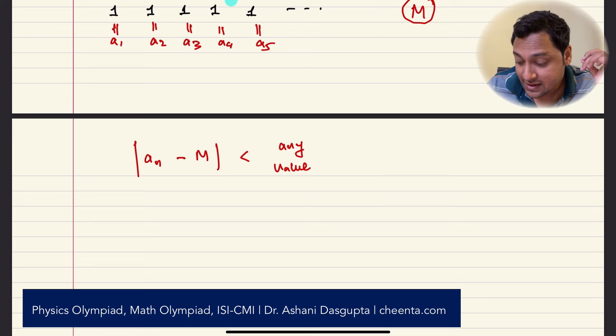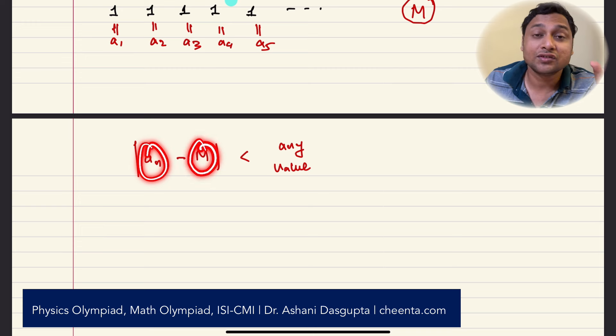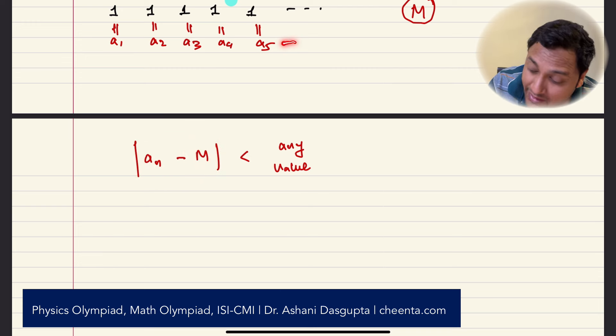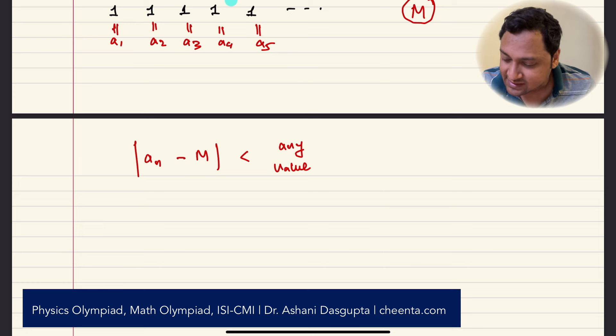What's needed is, this is one conceptual point, you want to bring, you want to be able to bring the sequence term as close to M as you want. The only freedom that you have is that you can move far away in the sequence to achieve that. Far away in the sequence. So in this case, the answer is very simple. M is just 1.